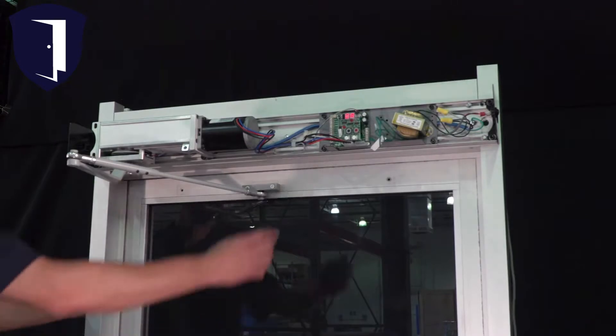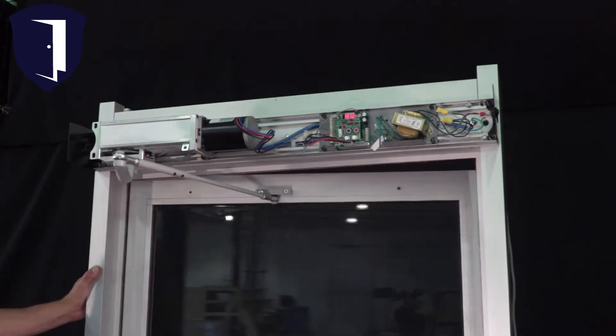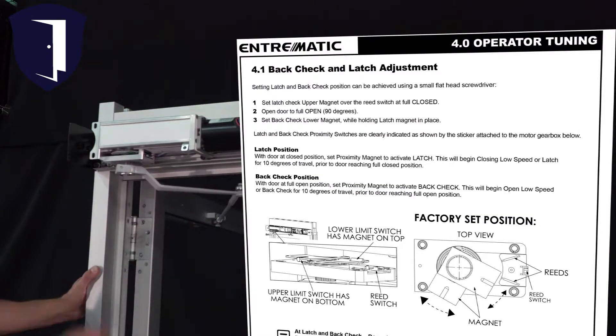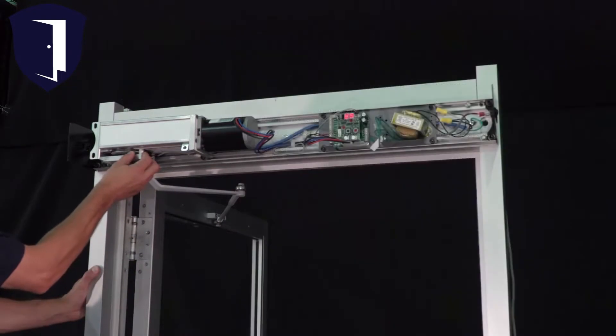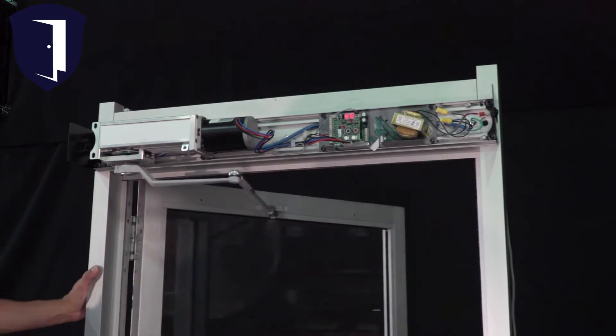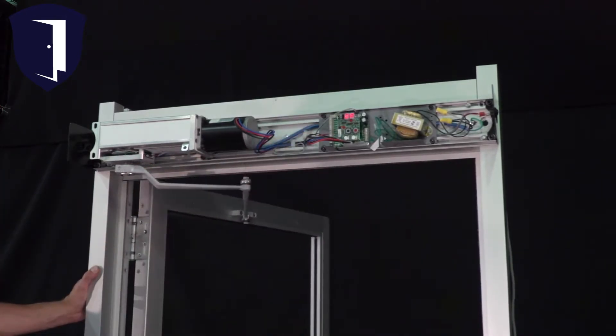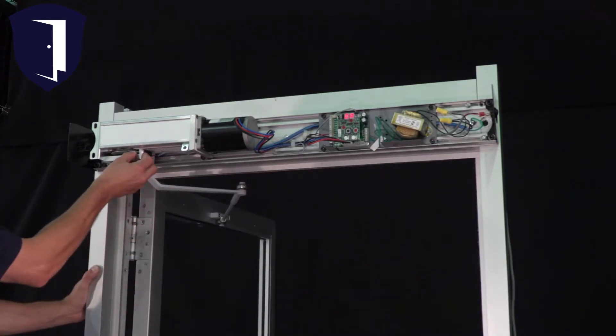This is a good time to adjust the back check setting. Section 4 in the manual gives full detailed instructions and there's a helpful diagram sticker attached to the gearbox. Trigger the door several times while adjusting the upper magnet. The proper setting should slow the door, or back check, at about 10 degrees before it reaches fully open.